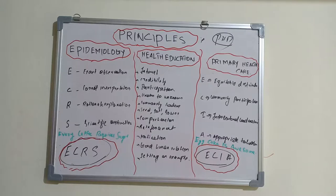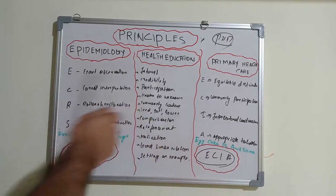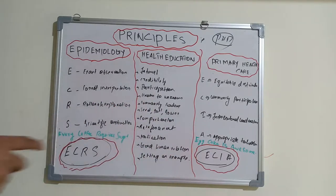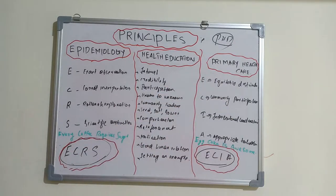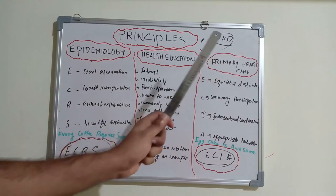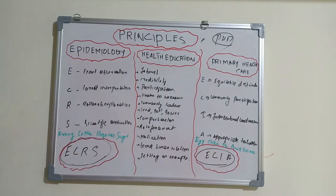Always keep in mind the concept behind each — never confuse epidemiology and primary health care. Epidemiology is how we conduct a study; primary health care is how health is provided to people at a grassroots level. These are the common questions asked in university under the public health or community health subject. Never get confused — always keep this picture in mind. I'll come up with another revision series in dentistry and more.